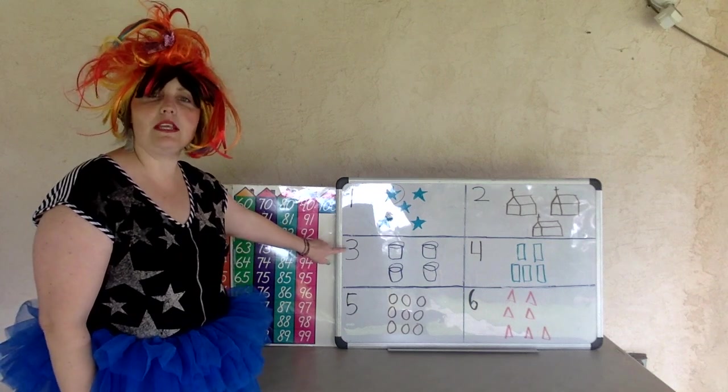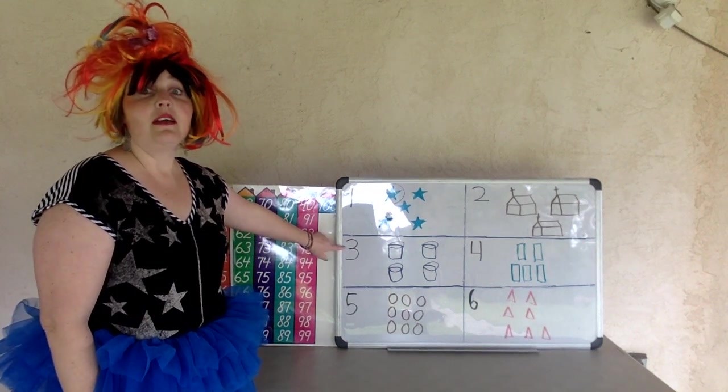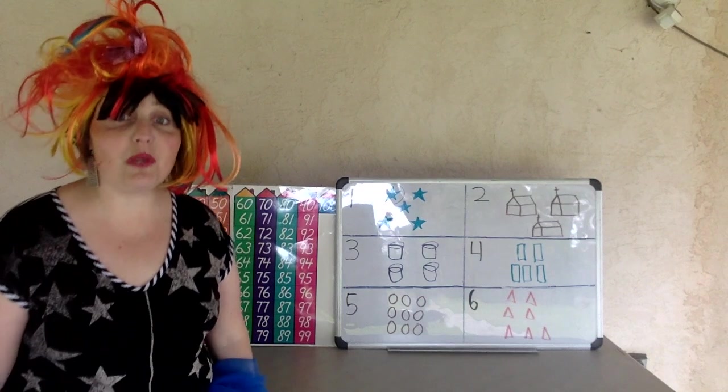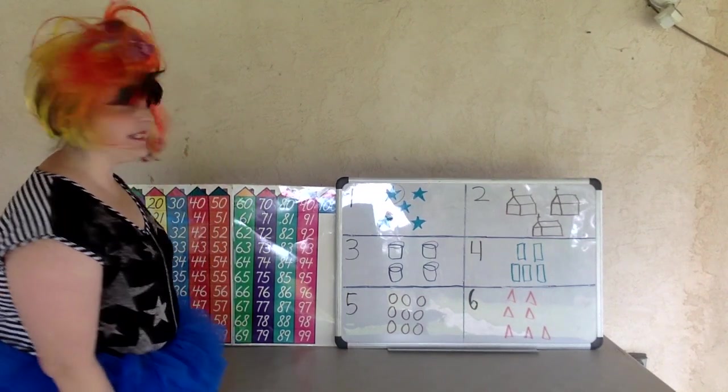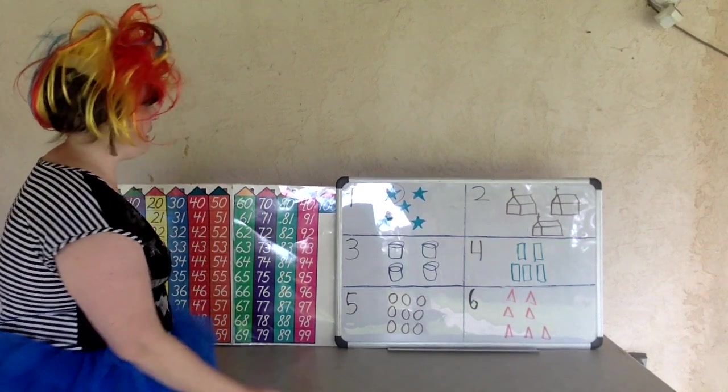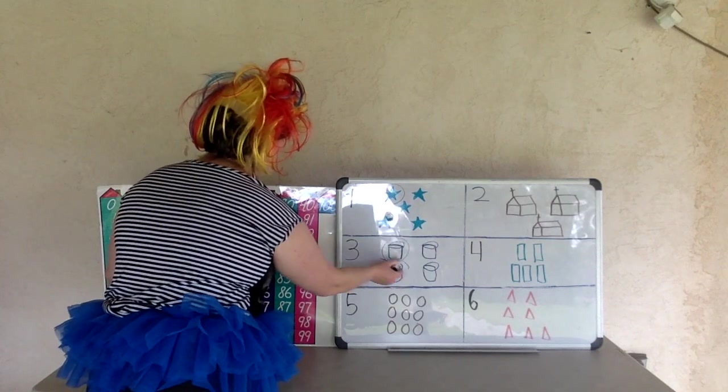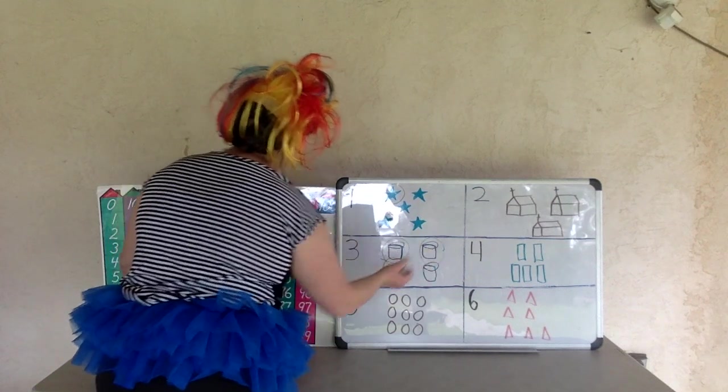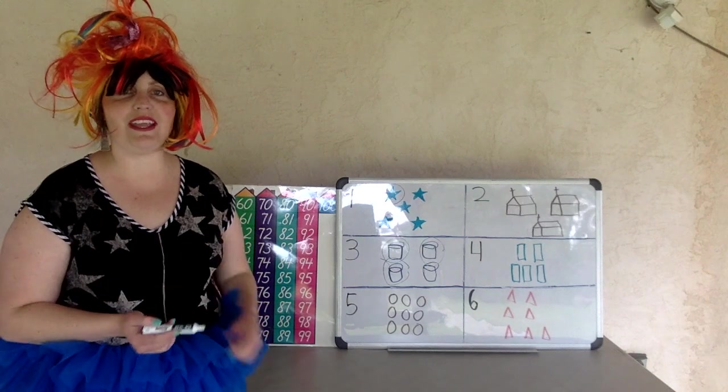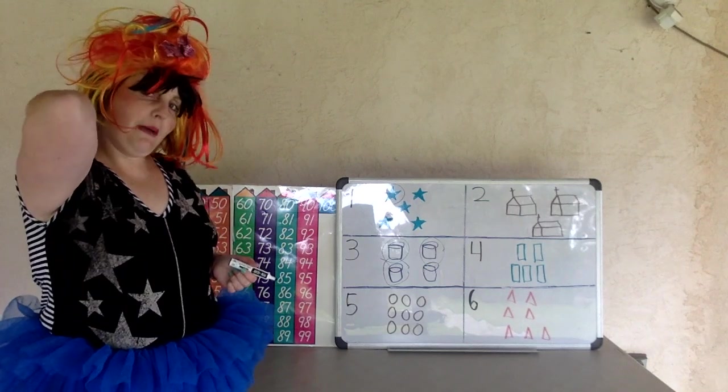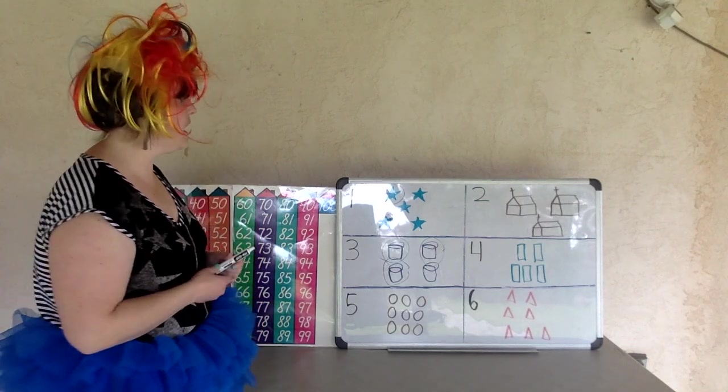What number do you see, Fiona, right here? Yes, a number three. Alright, Fiona, let's help circle three of these buckets. Ready? One, two, three. Did you circle three? Good job. Give yourself a pat on the back. Good job.